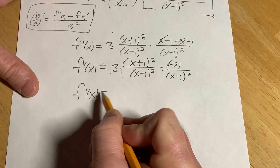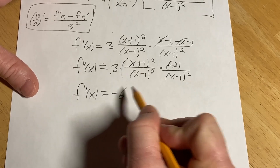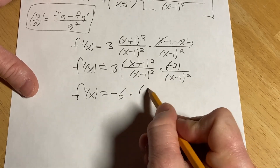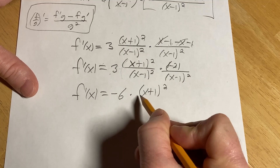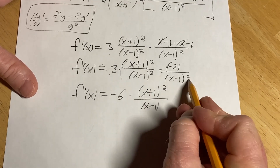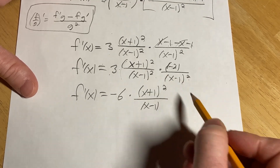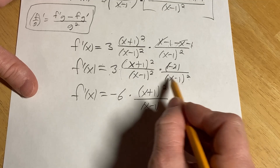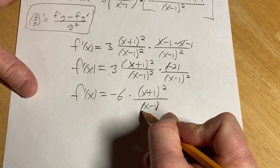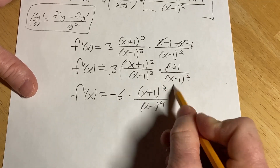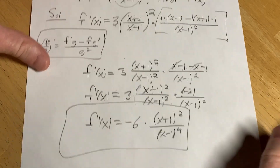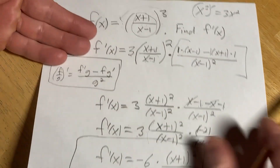So f prime of x is equal to negative 6 times x plus 1 squared, over x minus 1. And you add the exponents when you multiply these because the base is the same — x minus 1 — so this is going to be x minus 1 to the fourth power. And that, my friends, is the derivative of this function.